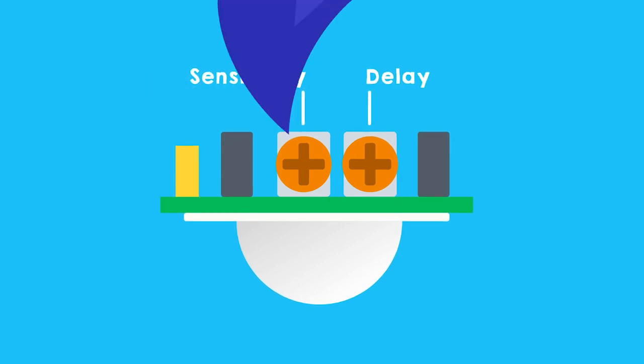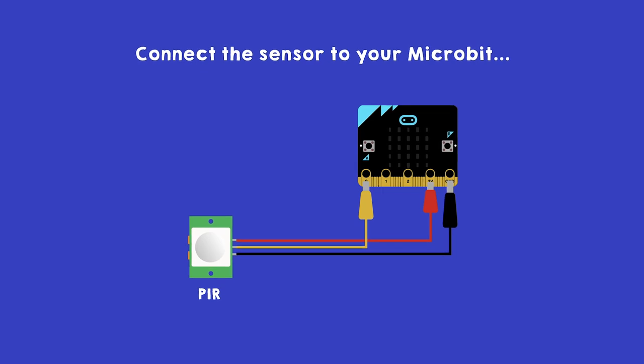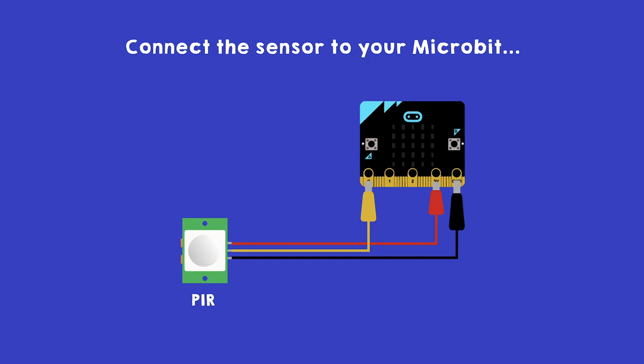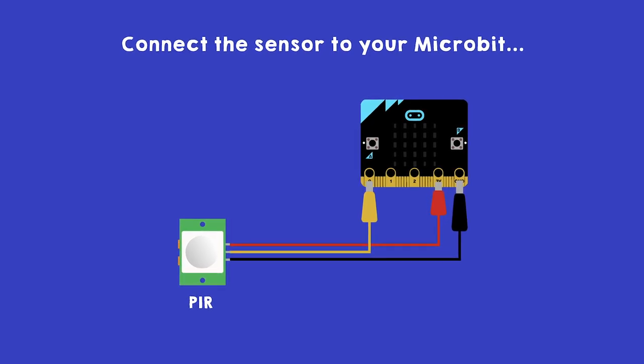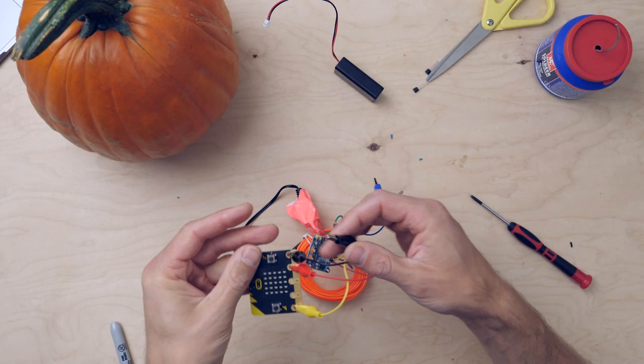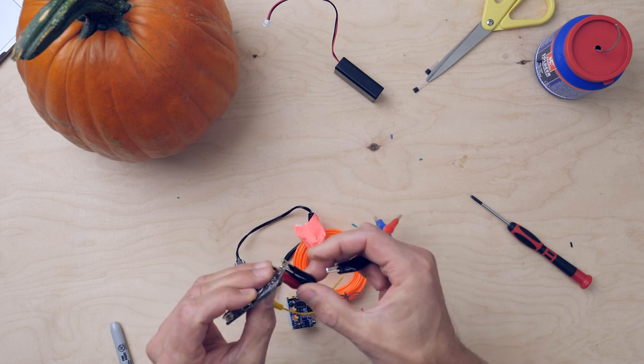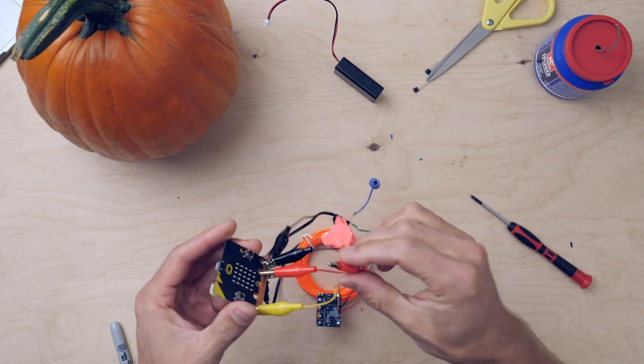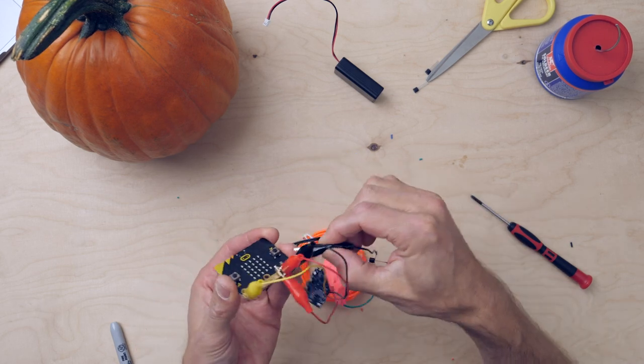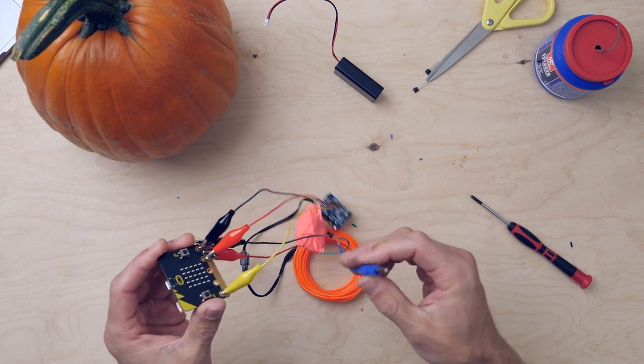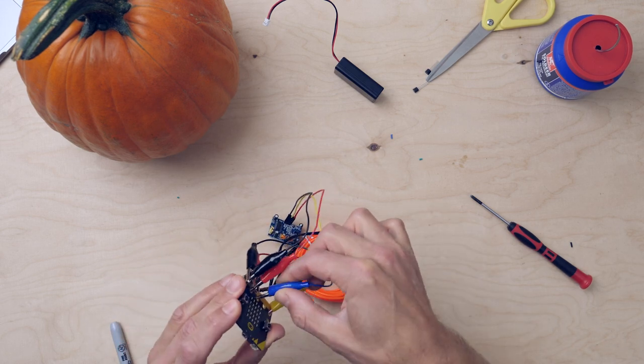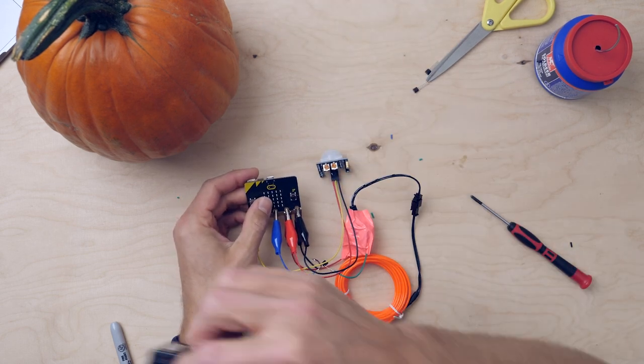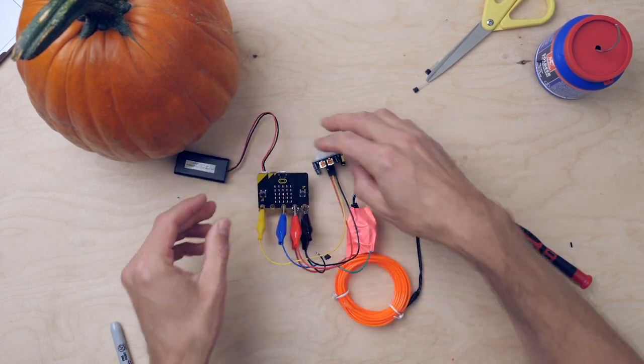Connect the jumpers. Now connect the transistor and the EL wire. This way. Connect the batteries. Ready for testing.